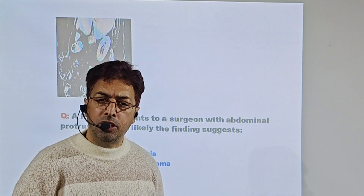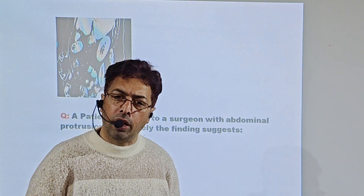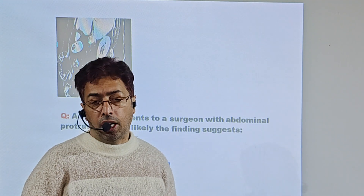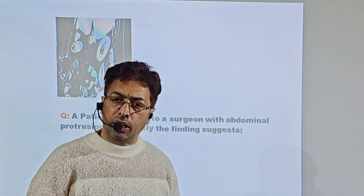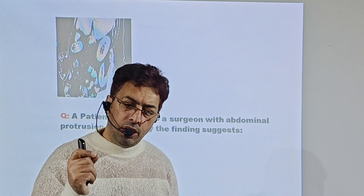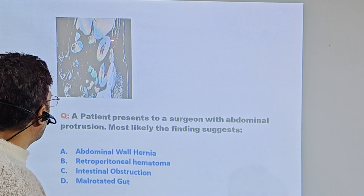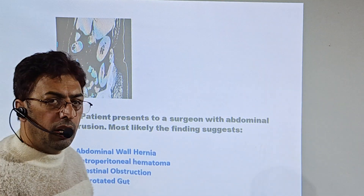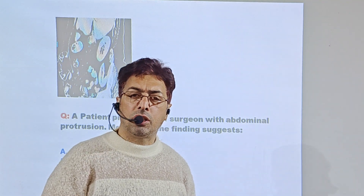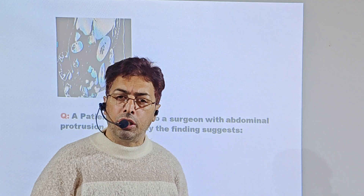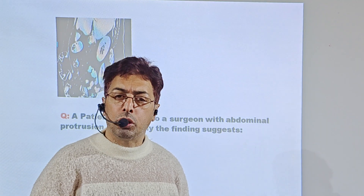Abdominal wall hernias are usually present in lean, malnourished patients with weak muscle tone, and can present with signs of obstruction. Retroperitoneal hematomas would be confined to the retroperitoneal region. Intestinal obstruction would show air-fluid levels. Malrotation of the gut would have other associated features and cannot be diagnosed from this CT scan. This is a grossly displaced gut protruding from the anterior aspect with a bulge on the anterior abdominal wall — simply abdominal hernia.